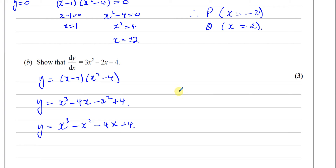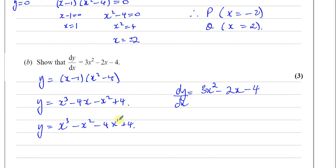Differentiating: multiply by the power and reduce the power by 1. So 3 times 1 gives 3x squared, then minus 2x, then for minus 4x you get minus 4 since 1 times 4 is 4 and x to the power of 0 is 1. The constant term, plus 4, is also dropped — it's x to the power of 0, and multiplying by the power gives 0. So dy/dx equals 3x squared minus 2x minus 4, as required.